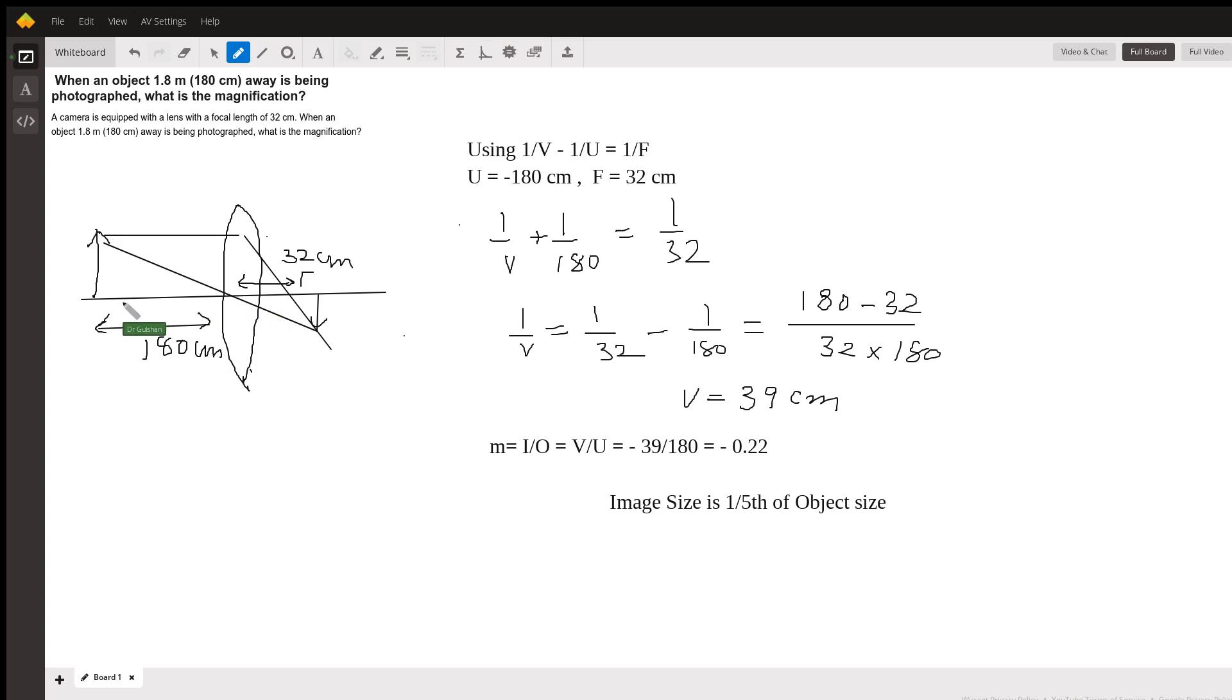The distance of the object, which is u, is negative 180 centimeters. We have to find the distance of the image, and the focal length is 32 centimeters on the positive side.